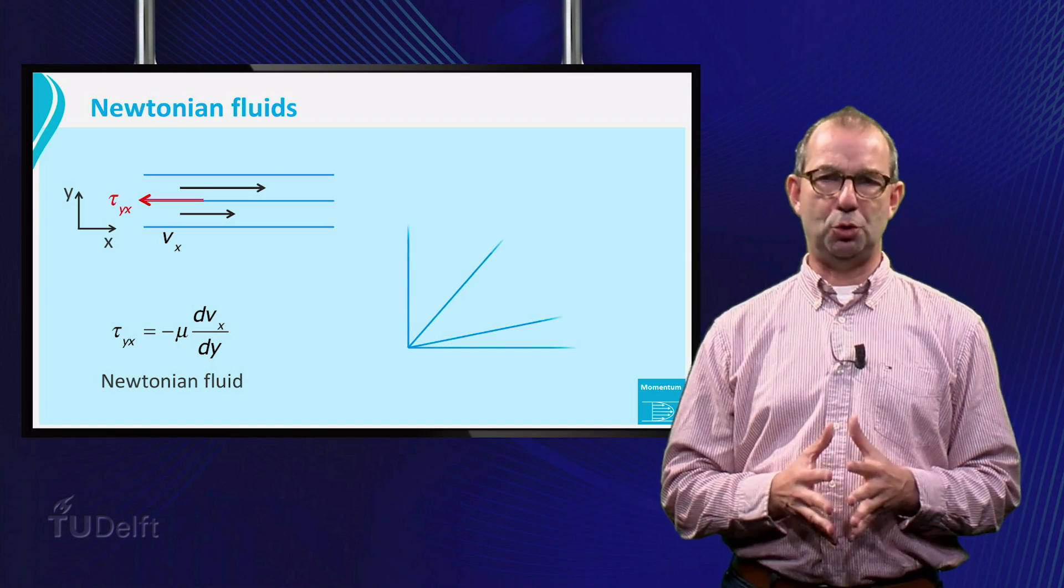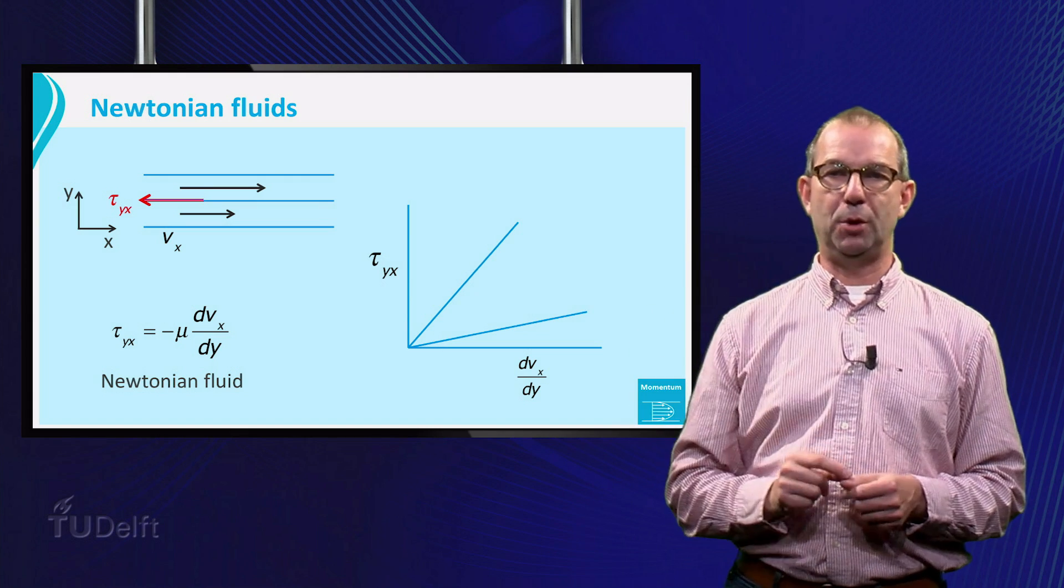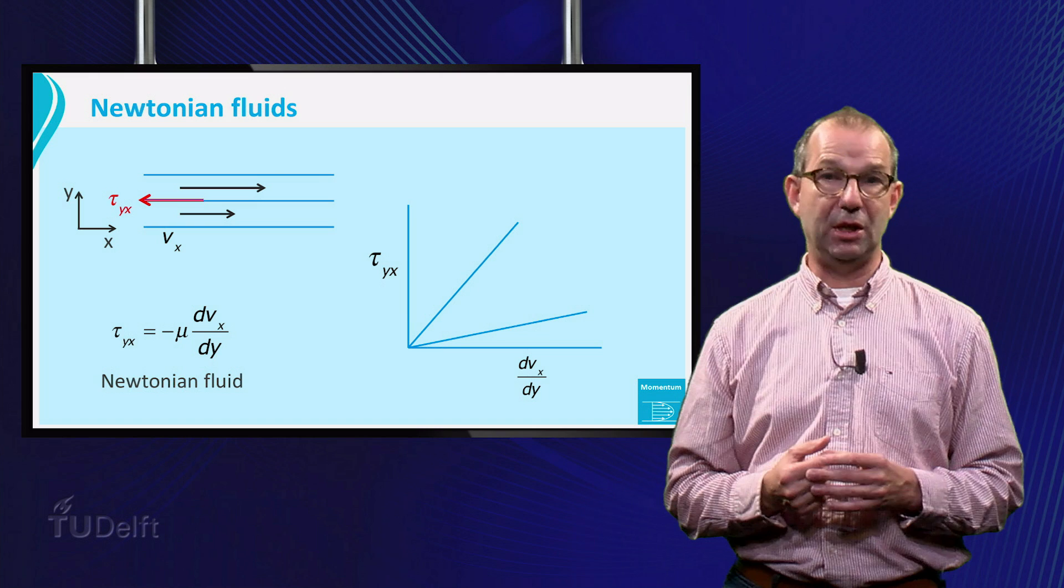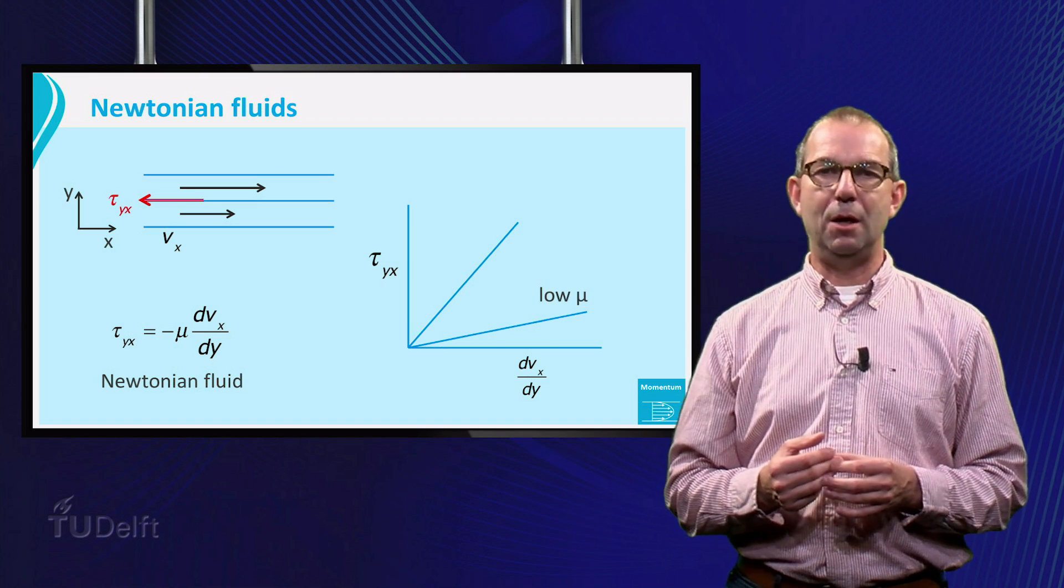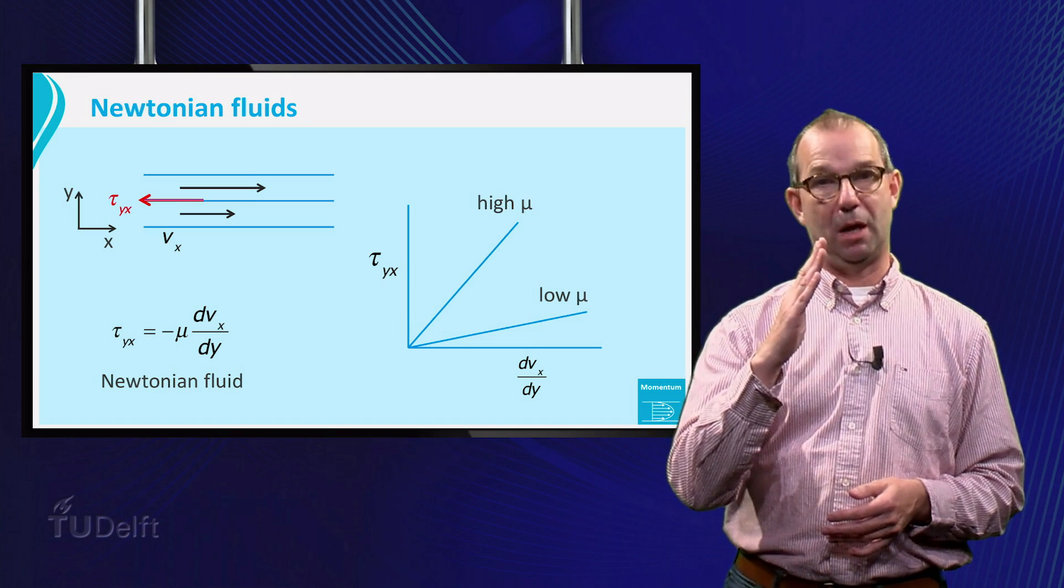Graphically, Newtonian fluids are characterized by a straight line in a plot of the shear rate dVx dy and the resulting shear stress tau yx. A low viscosity means a flat line. A high viscosity is a steep line.